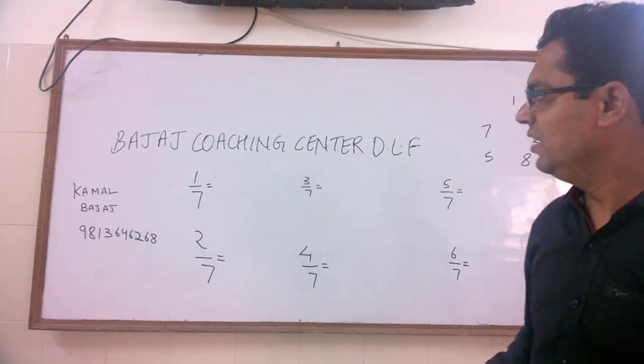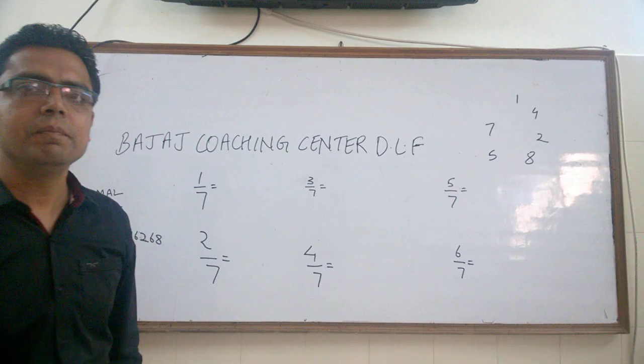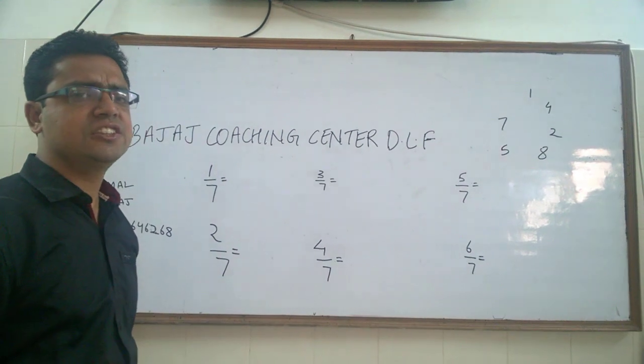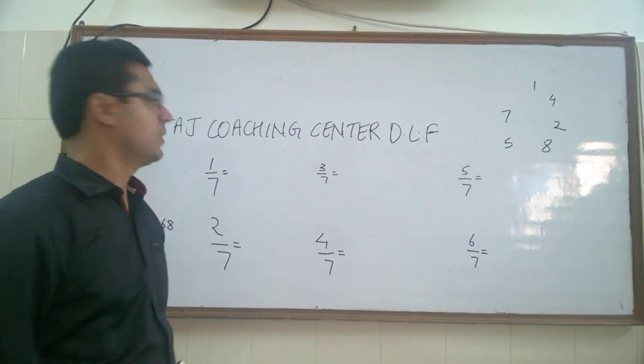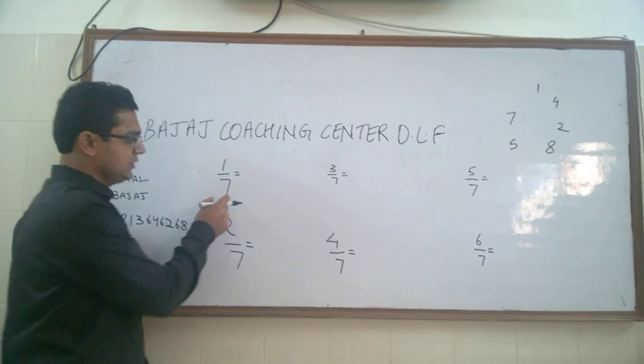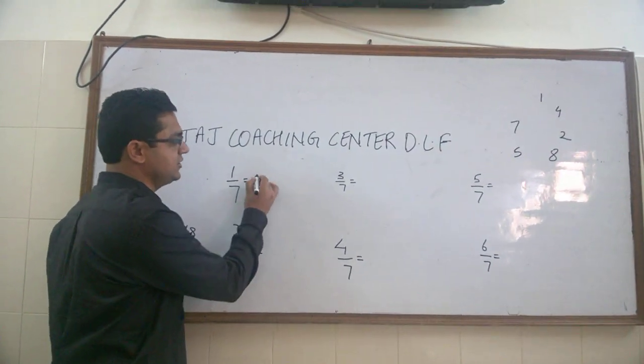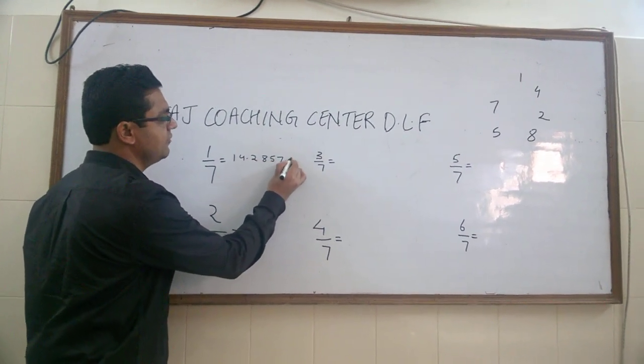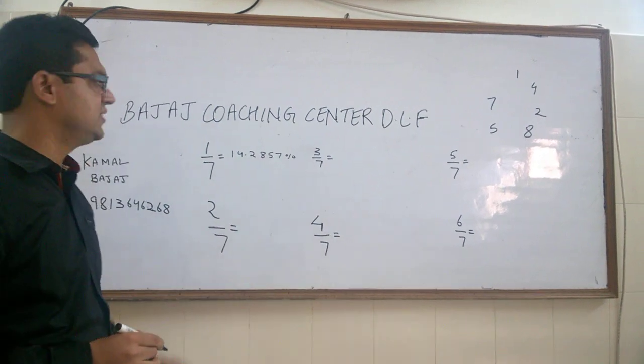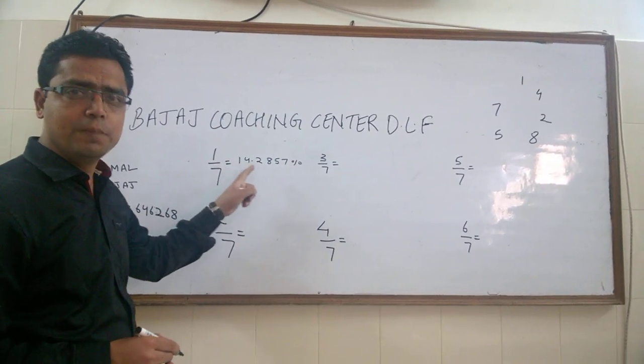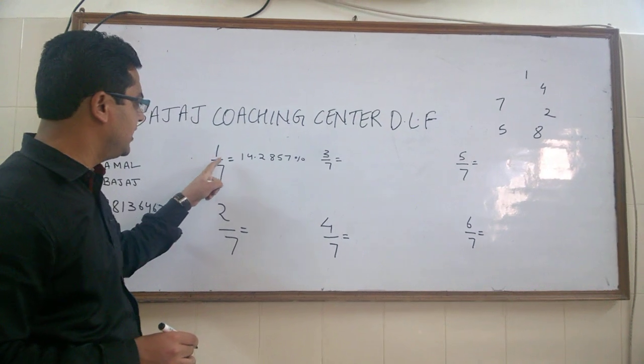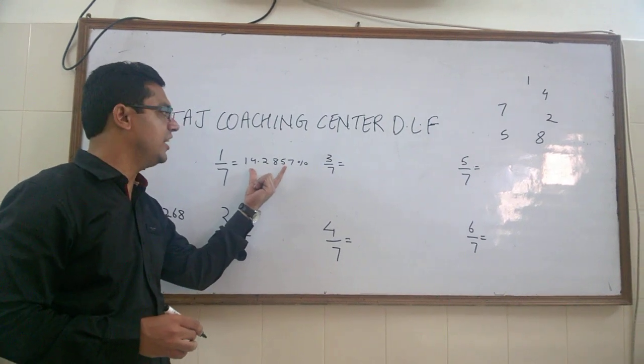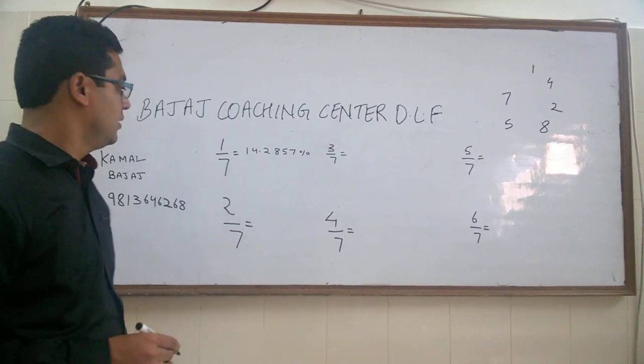Now we will learn some fractions related to one by seven series. If we don't use any trick, these fractions are very difficult to remember, so I derived a trick for this. If you remember one fraction, one by seven is 14.2857 percent. You know the percentage basics: if you want to convert a fraction into percentage, then multiply that fraction by 100 percent.